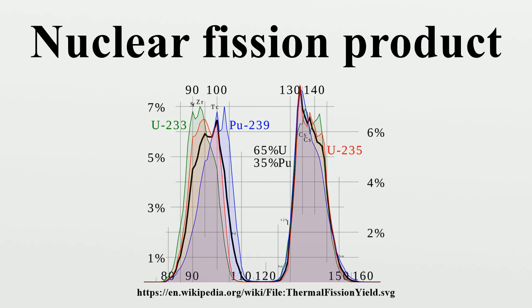While fission products include every element from zinc through the lanthanides, the majority of the fission products occur in two peaks. One peak occurs at about strontium to ruthenium, while the other peak is at about tellurium to neodymium.